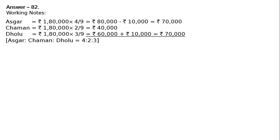This Rs. 1,80,000 profit will be distributed among Oskar, Chaman and Dholu in the ratio of 4:2:3. Hence, Oskar's share will be Rs. 1,80,000 × 4/9 = Rs. 80,000. For Chaman, it is Rs. 1,80,000 × 2/9 = Rs. 40,000. For Dholu, Rs. 1,80,000 × 3/9 = Rs. 60,000.